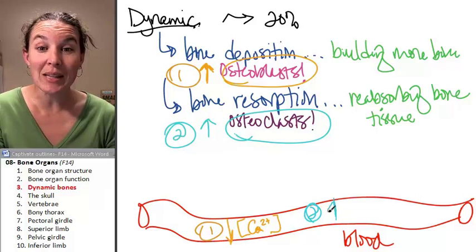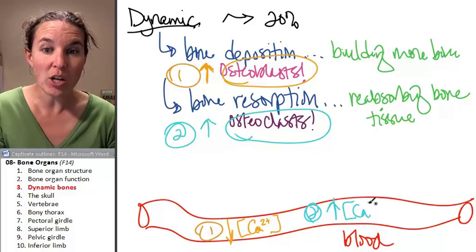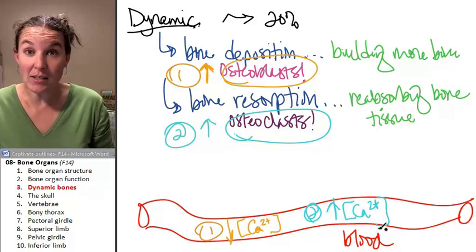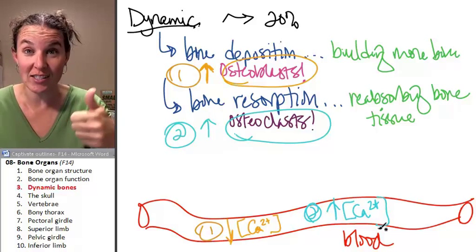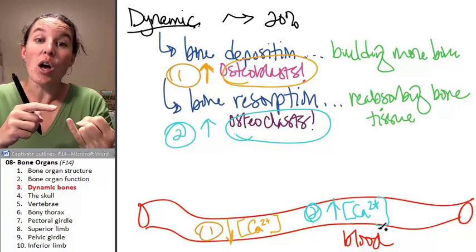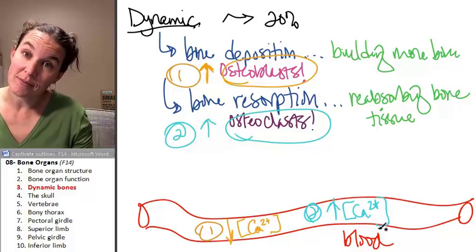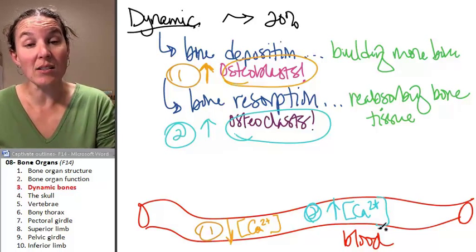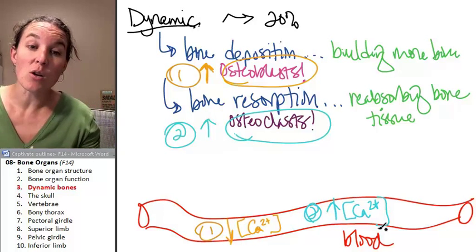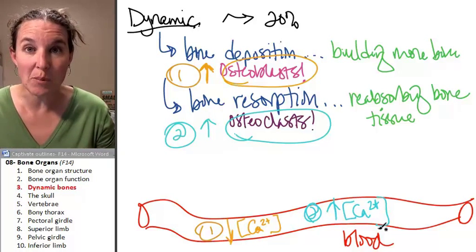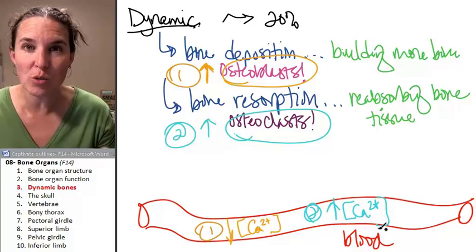It goes into the blood. Do you agree? Which causes blood calcium concentrations to increase. So bone resorption results in increased calcium concentration in your blood. Bone deposition results in decreased calcium concentration in your blood.